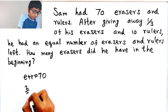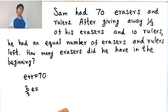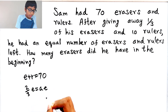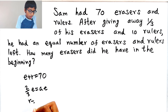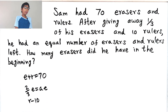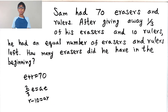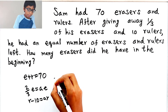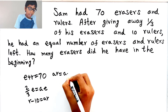So two-thirds of his erasers equals AE. And he gave away 10 rulers, so it would be R minus 10, where R is how many rulers he had before, minus 10, equals AR. He had an equal number of erasers and rulers left, so that means AR equals AE.